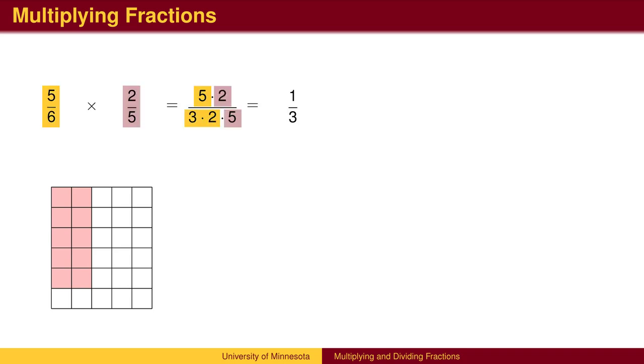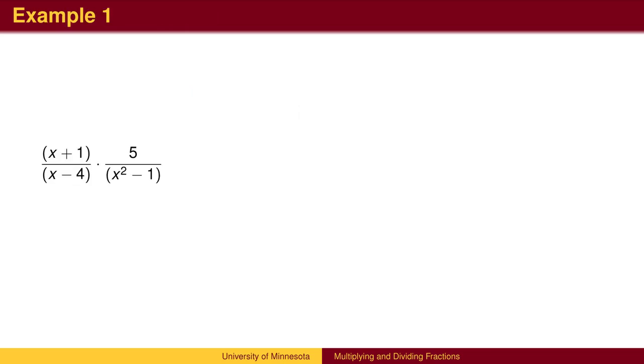Notice that the factors of the original fractions combine to make the factors of the product. The same holds true for polynomials. The factors in the product come from factoring the individual numerators and denominators. In this case, the second denominator factors as a difference of squares. Common factors can then be canceled to simplify the answer.